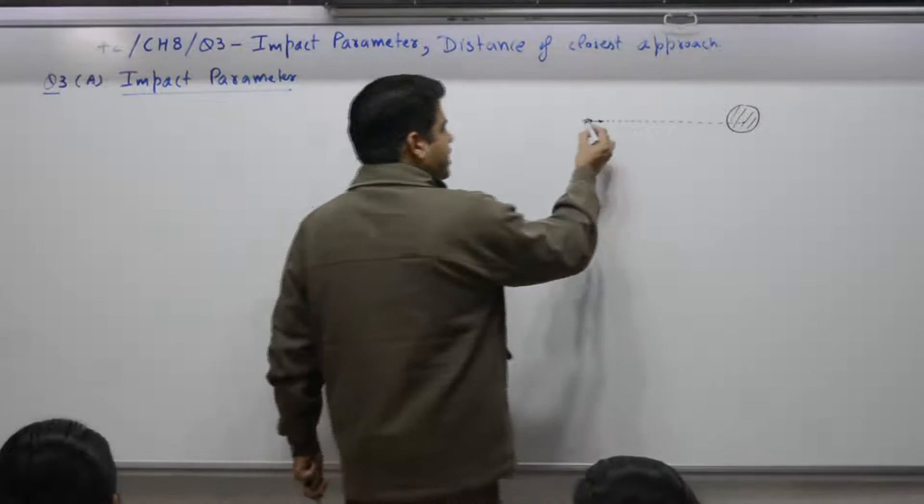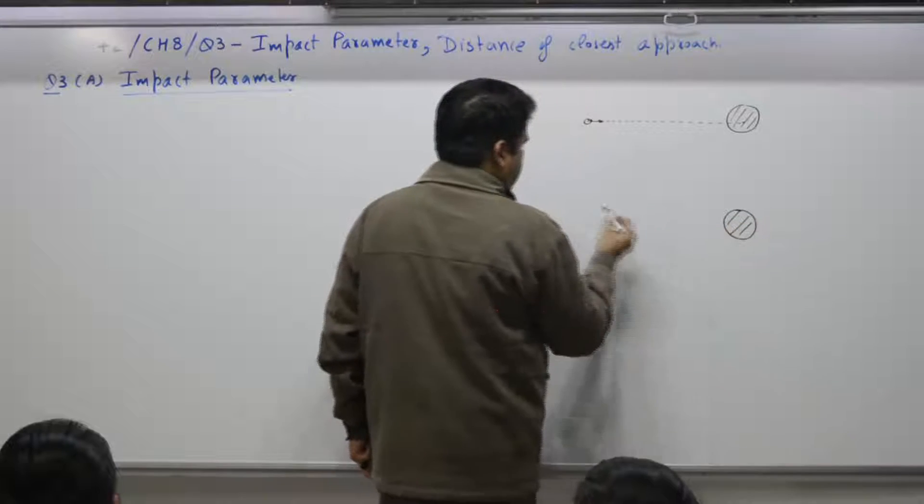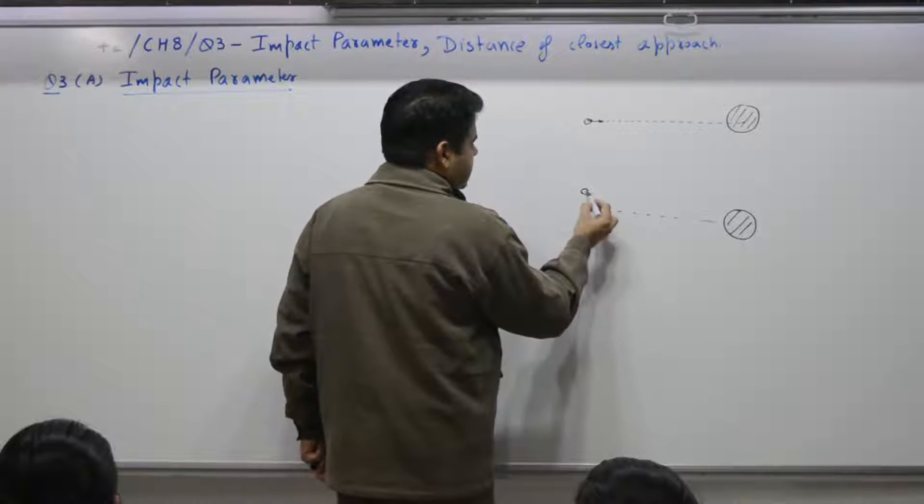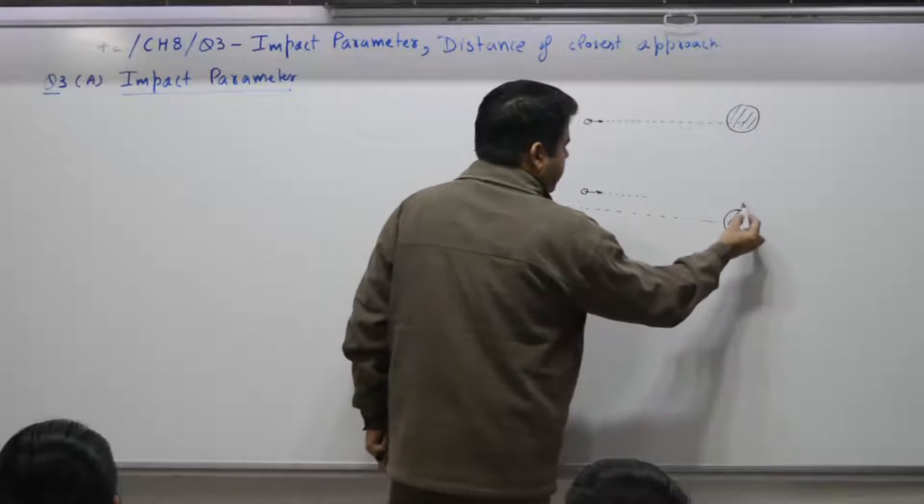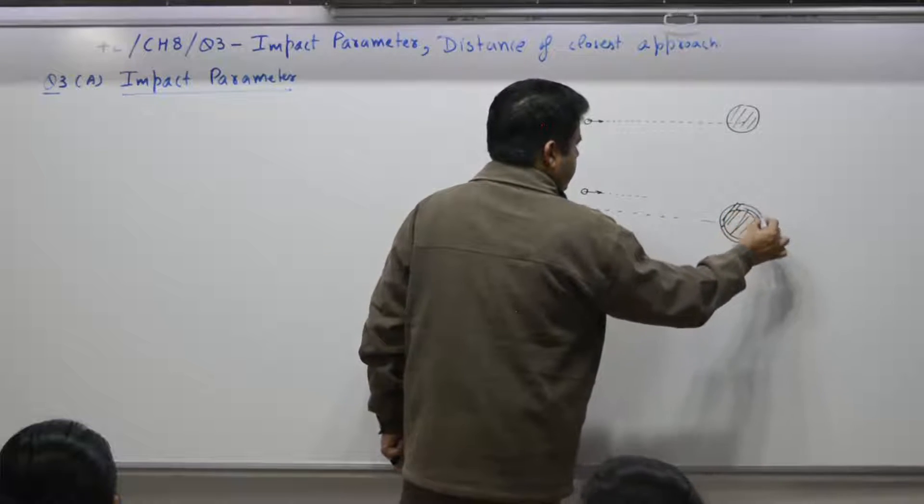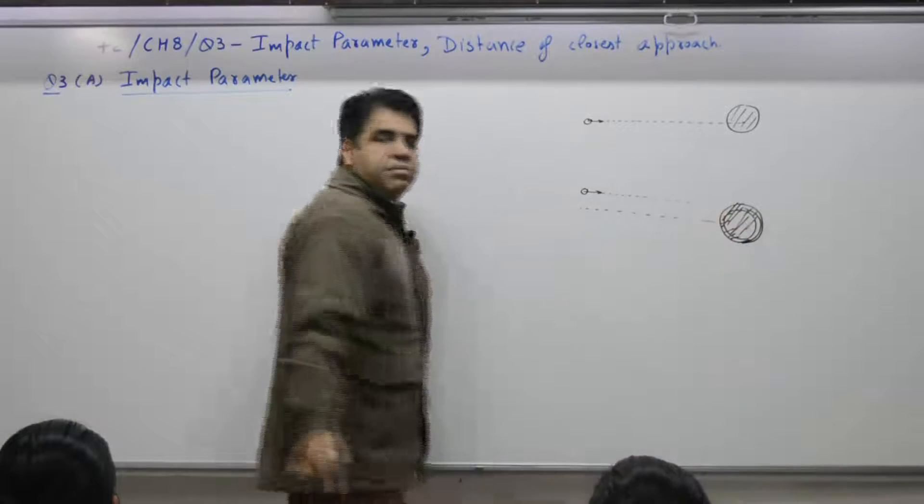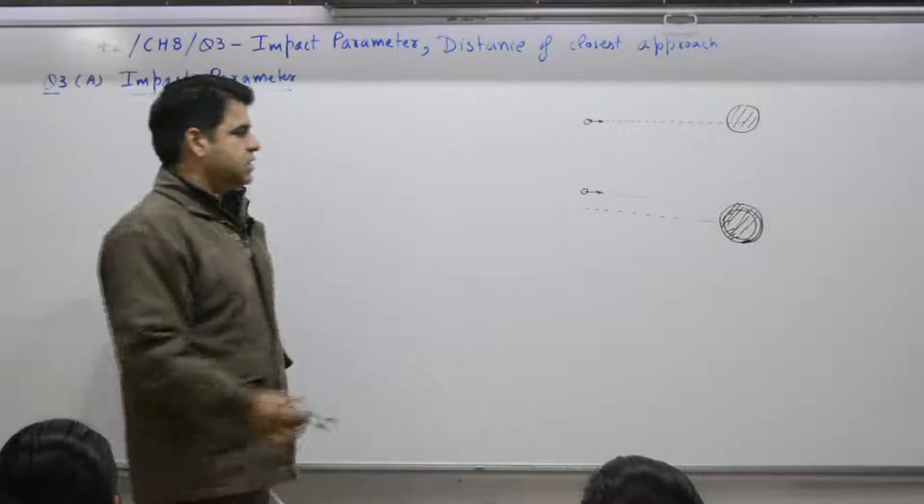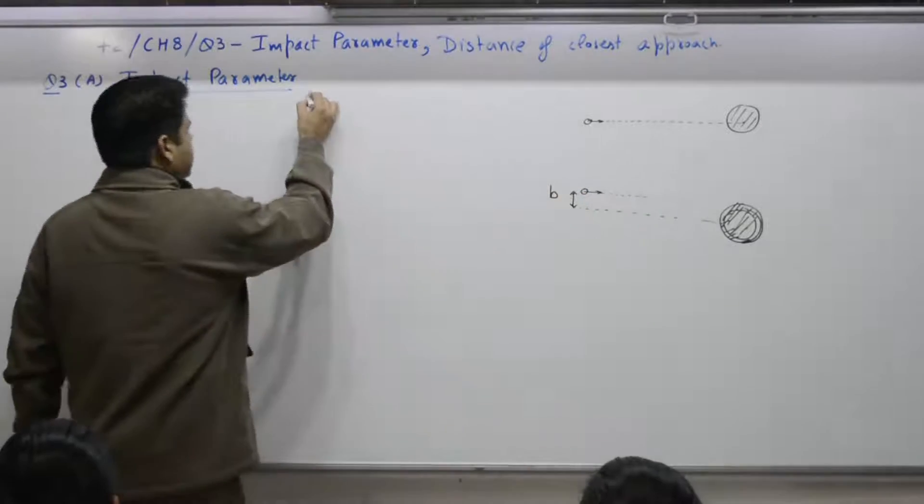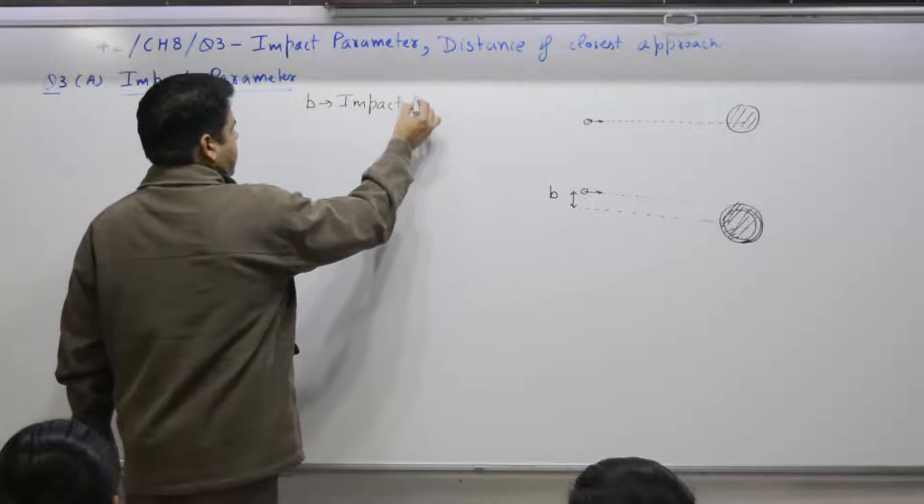If the particle is not moving along this line, then suppose particle is moving along this line, it will hit this particle. Let me draw this size to this one, to new height, new level. It will collide, but impact of collision will be less. This perpendicular distance B is known as impact parameter.